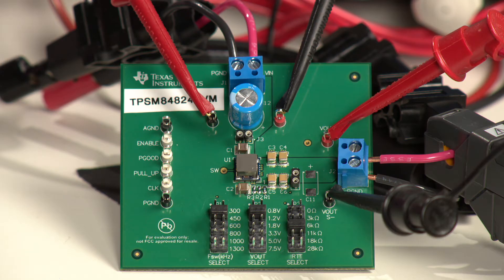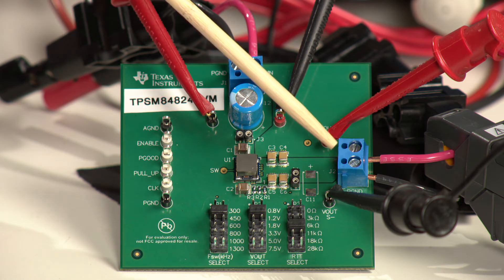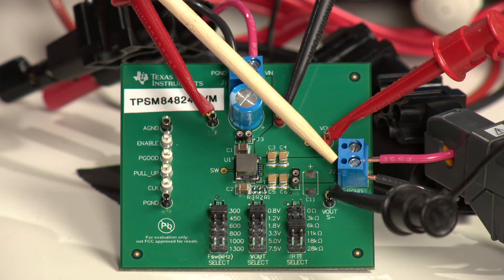So when applying input voltage, apply the input to the terminal block on the top of the board. When connecting the load, connect it to the terminal block on the right of the board.